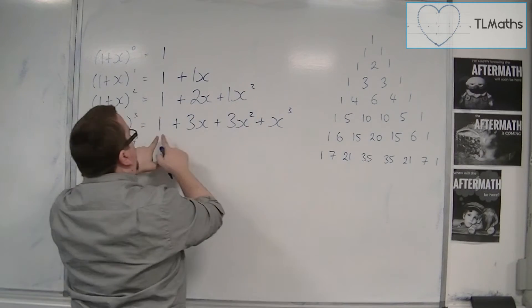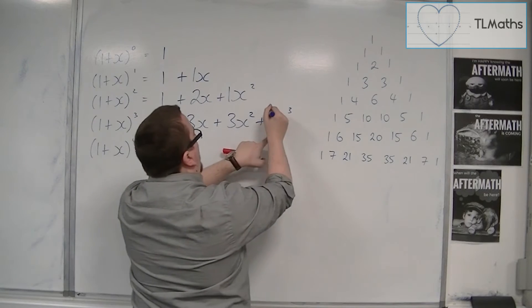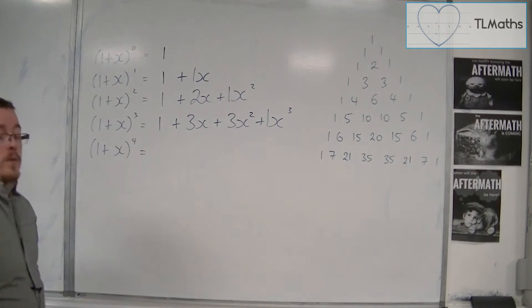Then you have 1, 3, 3, 1, which corresponds to that row in Pascal's.